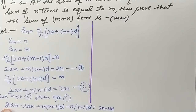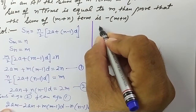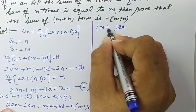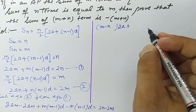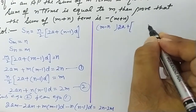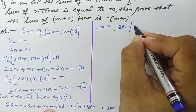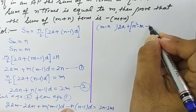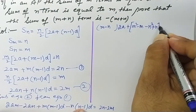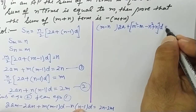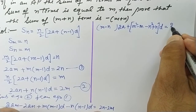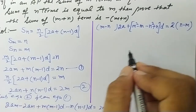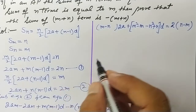Now take 2a common from the first two terms, leaving (m−n). Then take d common from the remaining terms, leaving m²−m − n²+n. On the right-hand side, take 2 common, giving 2(n−m).